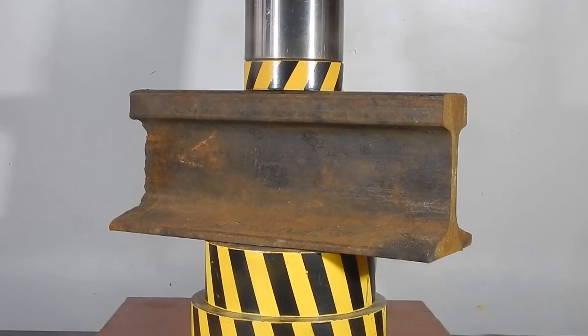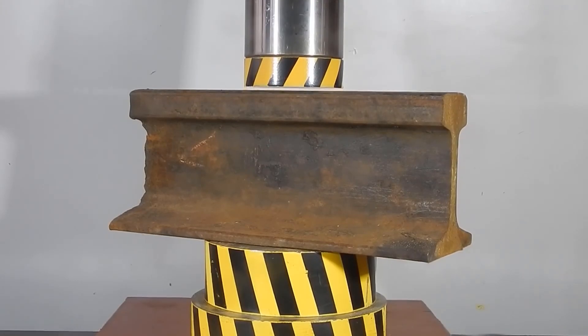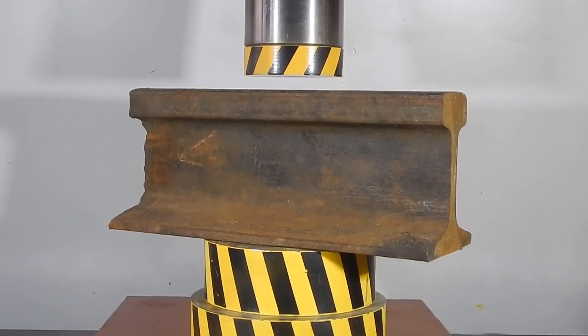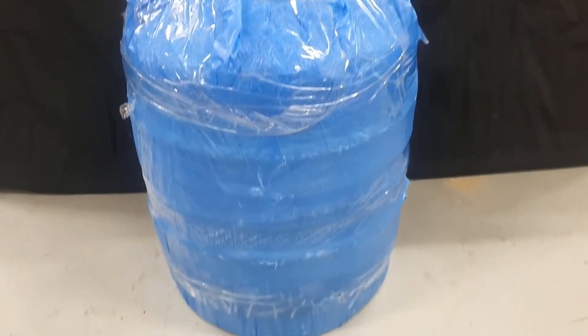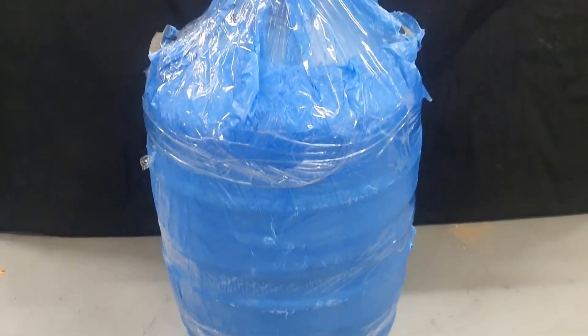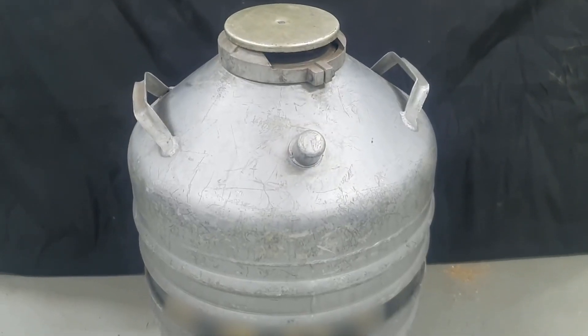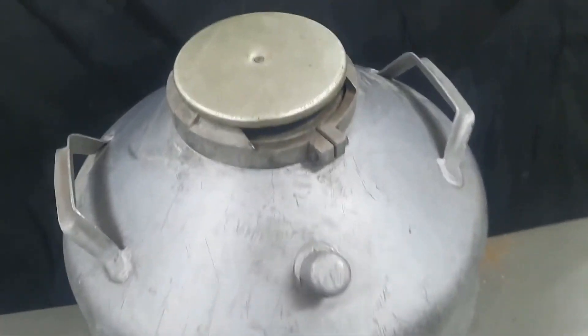In the comments someone wrote that you can try to cool the rail in liquid nitrogen and see if its strength will change. Indeed, I saw in one video that allegedly a rail cooled in liquid nitrogen can be broken with a sledgehammer, but personally I somehow doubt it.